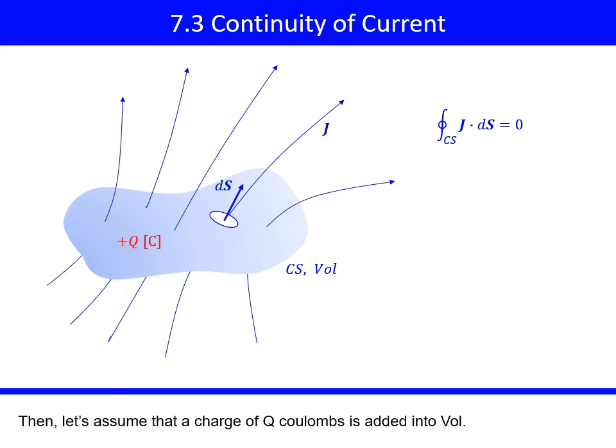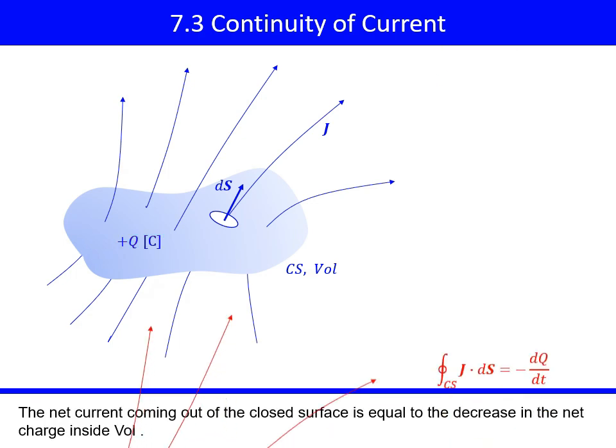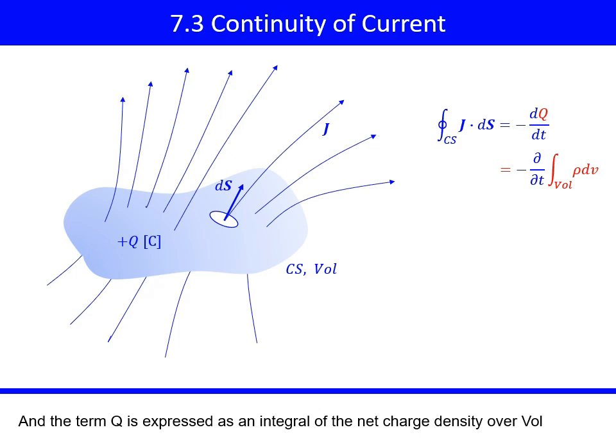Then, let's assume that a charge of Q coulombs is added into volume. The net current coming out of the closed surface is equal to the decrease in the net charge inside vol. And the term Q is expressed as an integral of the net charge density over volume.